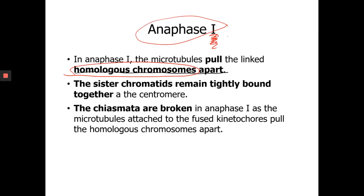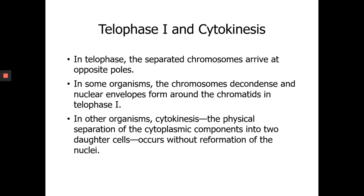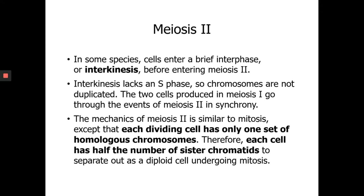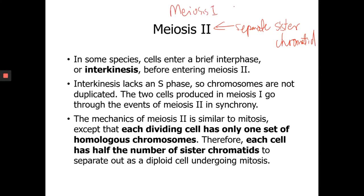To summarize: if asked in which stage of meiosis homologous chromosomes are pulled apart, the answer is Anaphase I. If asked when sister chromatids are separated, the answer is Anaphase II. The main goal of Meiosis I is to separate homologous chromosomes; the main goal of Meiosis II is to separate sister chromatids.